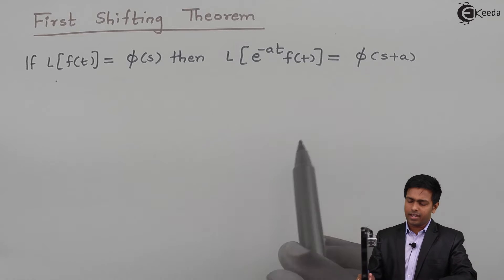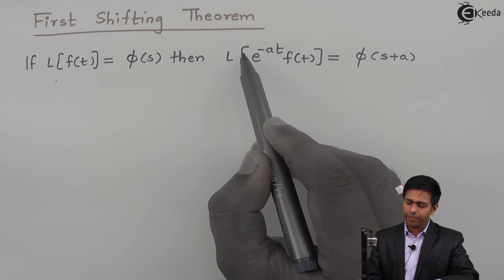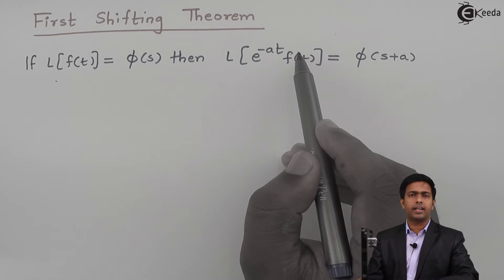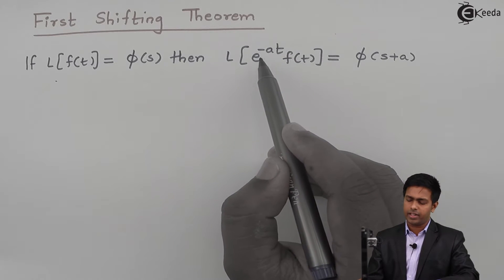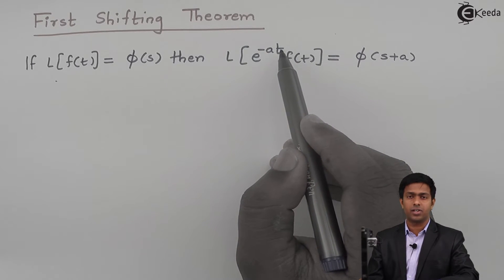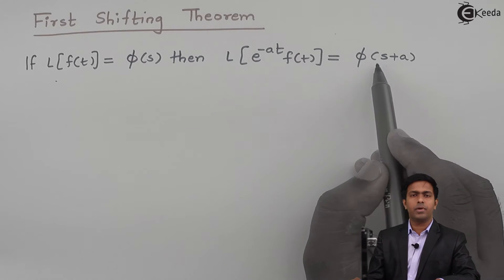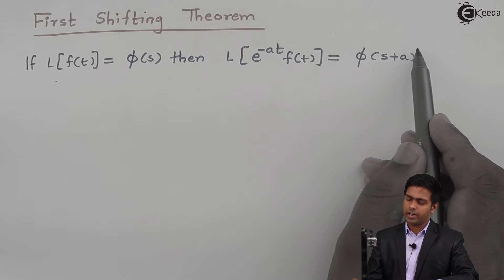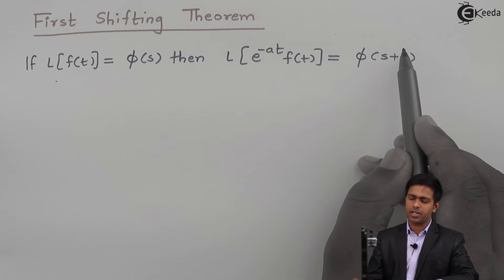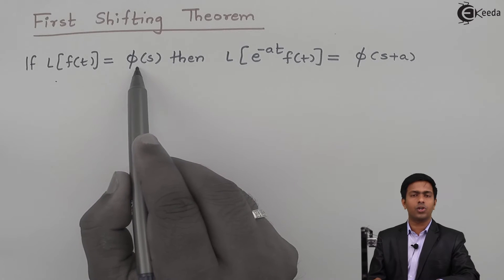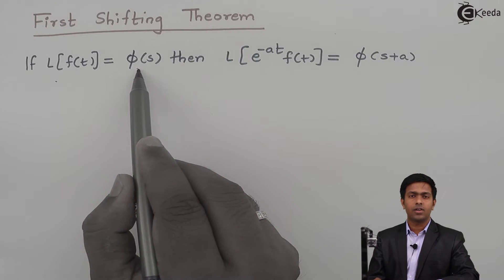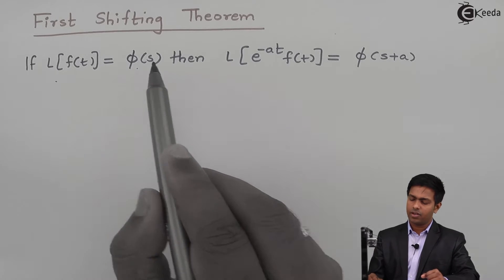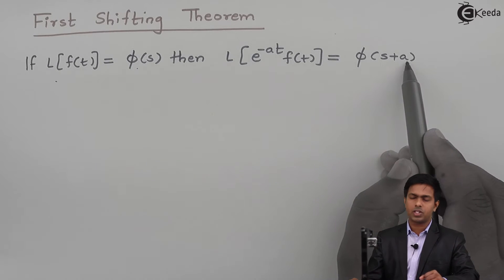It means that whenever any function is getting multiplied with the e raised to minus at term, then the answer will be F(s+a), and we will get this value by substituting — or you can say by replacing — s with s plus a.